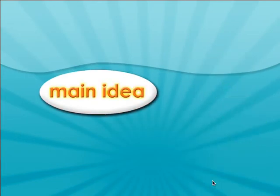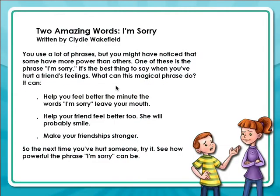Click here to see how to answer a main idea question. Here's an article. As we read it, let's first look for the author's topic. You find it by looking for important words that are used over and over again.